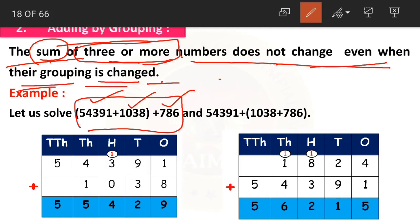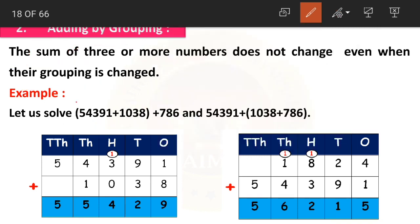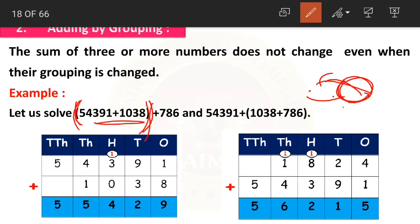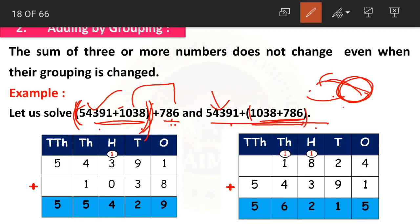In the first example, 54,391 and 1,038 are grouped together in brackets, and 786 is left out. In the second example, 54,391 is left out and 1,038 and 786 form the group. The brackets show which numbers are grouped — just like friends who go together hold hands.